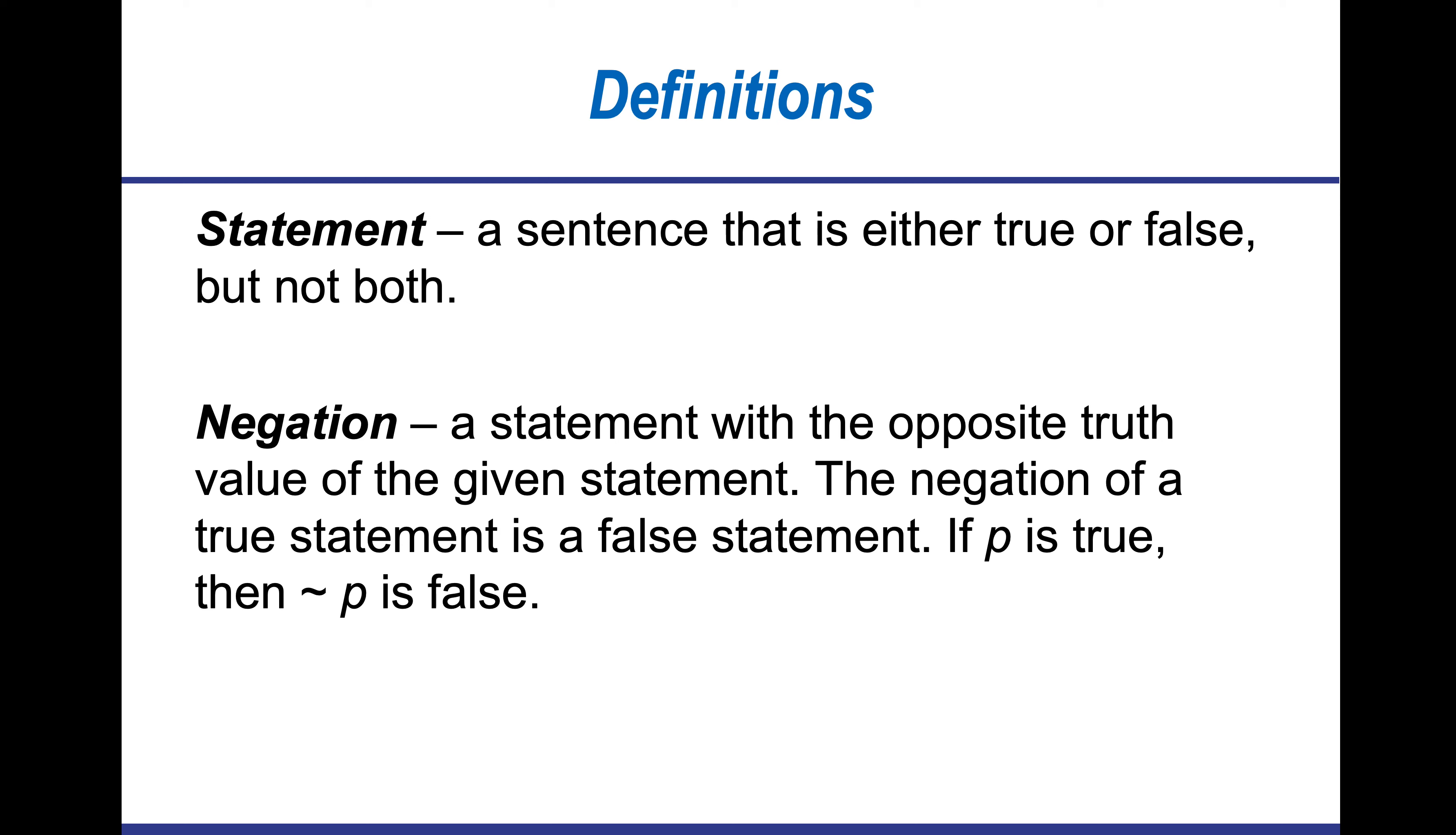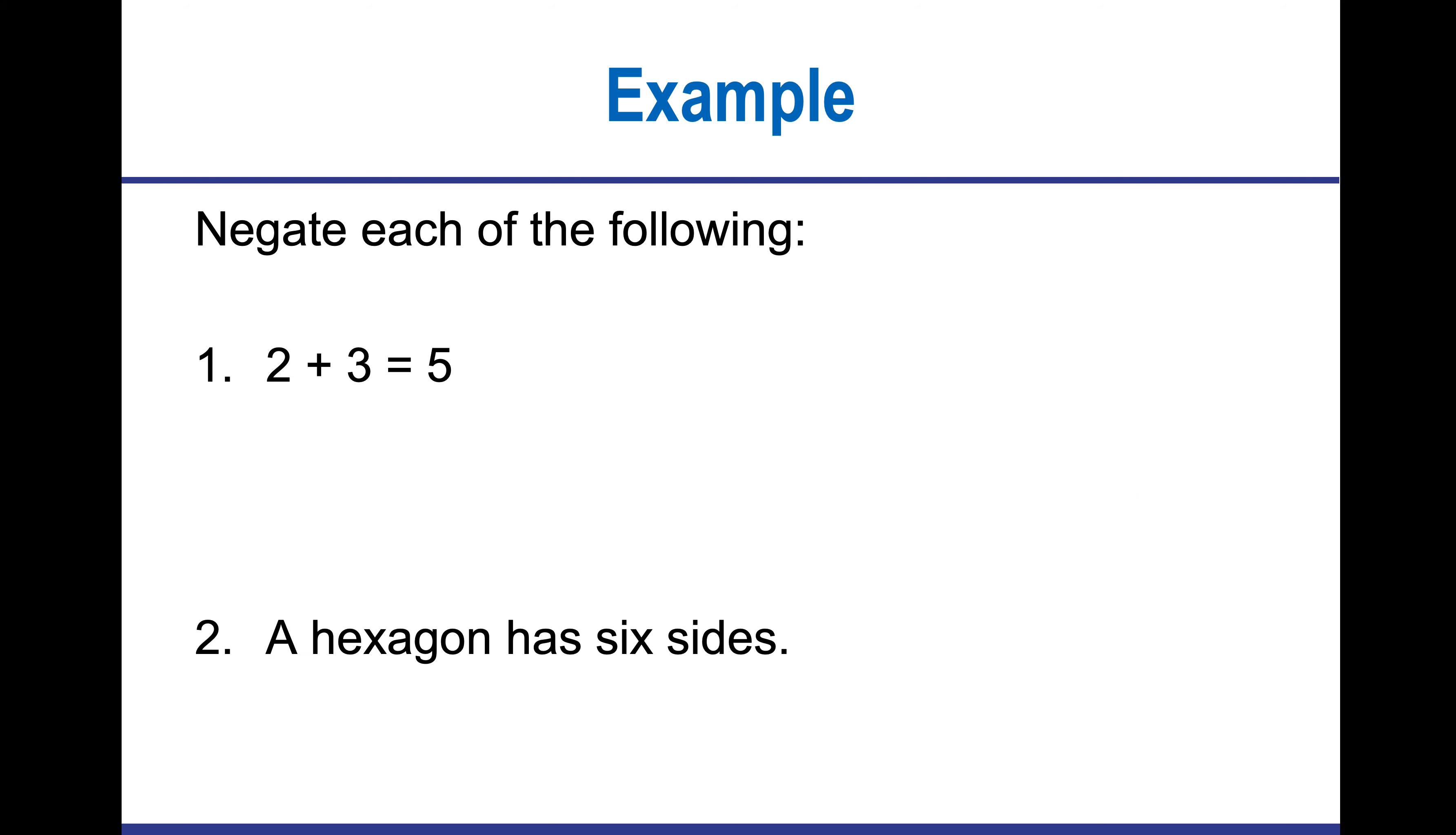Here are some definitions. A statement is a sentence that is either true or false, but it cannot be both. A negation is making a true statement false. If I want to negate two plus three equals five, I would say two plus three is not equal to five. A hexagon has six sides becomes a hexagon does not have six sides.